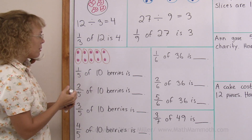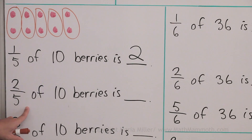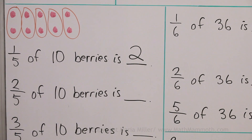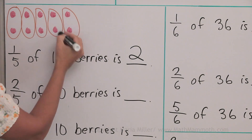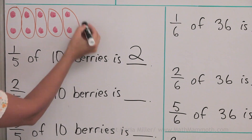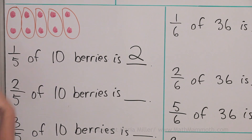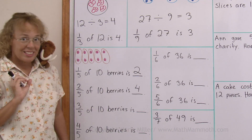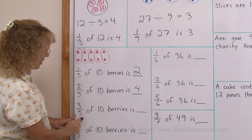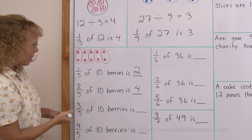So one fifth of ten berries is two berries. Now, how about two fifths of the ten berries — how many would that be? One fifth part of all of them is this, and two fifths is double that — I take two parts. That's two fifths of all of them, so that would be four berries. And then similarly, three fifths of all of them would be three groups out of five, so it is six berries.